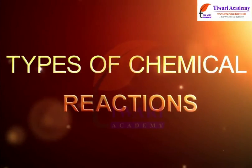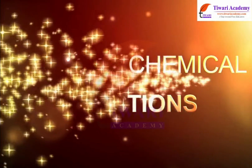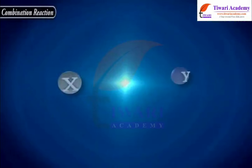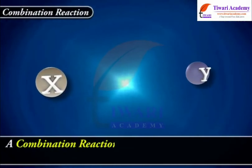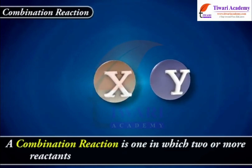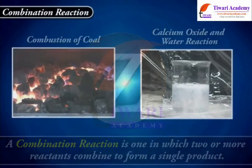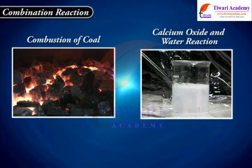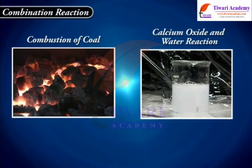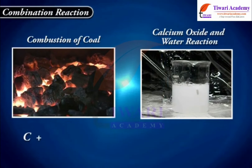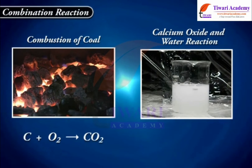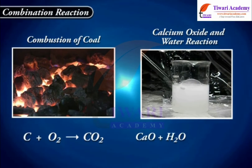Types of chemical reactions. A combination reaction is one in which two or more reactants combine to form a single product. Examples include the combustion of coal and the reaction of calcium oxide with water: C + O2 gives CO2, and CaO + H2O gives Ca(OH)2.